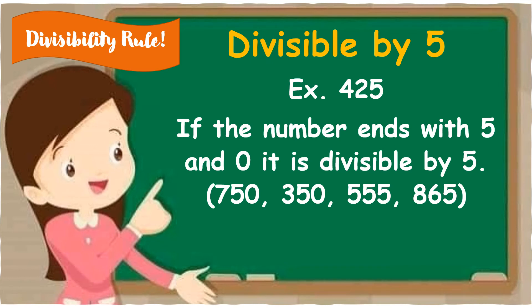Divisibility rule — divisible by 5. Example for this is 205. If the number ends with 5 and 0, it is divisible by 5. Example: 750 — ang 750 ay nag-e-end sa 0, therefore it is divisible by 5. Kapag nag-e-end ang numbers sa 5 at 0, divisible by 5 siya.